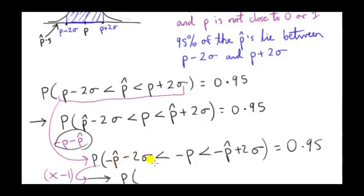The last step is to take this inequality and multiply all three terms by minus 1. So the first term becomes P hat plus 2σ. This term becomes P. That's what we want - P in the middle. And the last term becomes P hat minus 2σ. Multiplying by minus 1 changes the direction of the inequality.